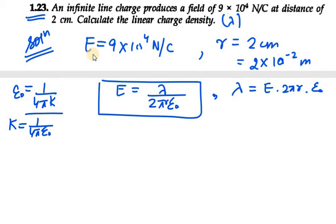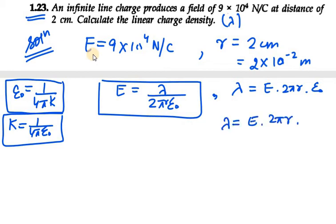So I will be putting the value of epsilon naught as 1/(4πk). So let's put this value: it will be E · 2πr · 1/(4πk). Now we can cancel the value of pi; that's why I have converted epsilon naught in terms of 4πk.